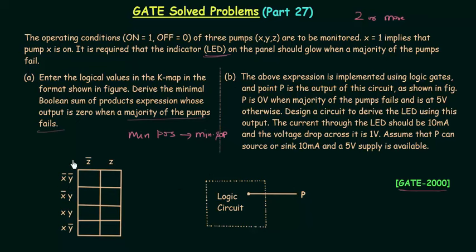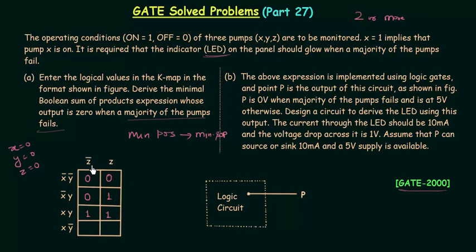Filling the K-map: for x'y'z', all three pumps are off, output is 0. For x'y'z, two pumps off, output is 0. For x'yz', two pumps not operating, output is 0. For x'yz, y and z are on and x is off, output is 1. For xy'z', x on but y and z are off, output is 0. For xyz', output is 1. For xyz, all three pumps on, output is 1. For xy'z, two pumps on, output is 1.